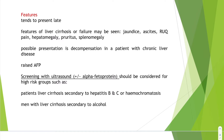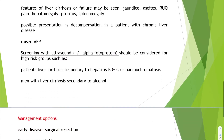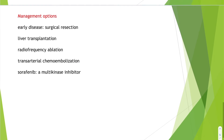Screening with ultrasound, with or without alpha-fetoprotein, should be considered for high-risk groups — patients with liver cirrhosis secondary to hepatitis B and C, hemochromatosis, or alcohol. Screening for these specific groups is done with ultrasound with or without alpha-fetoprotein, and is normally performed annually.